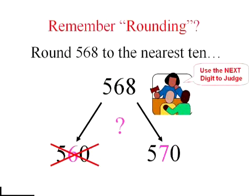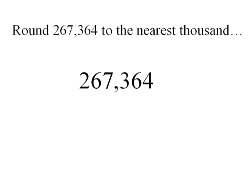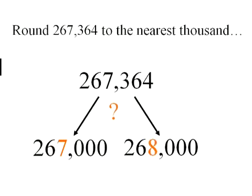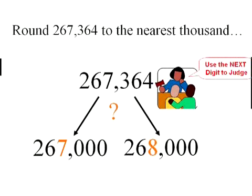Let's do another. We're going to round this number to the nearest thousand. Find the thousands digit and everything else after that is going to have to be a zero. So it's either going to be 267,000 or 268,000. We use the next digit to decide. Now 3 is halfway, it's not quite halfway so we're going to stay the same. We never go down. So the answer rounded to the nearest thousand is 267,000.